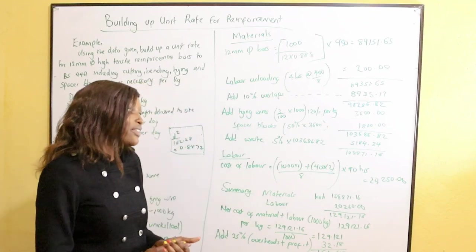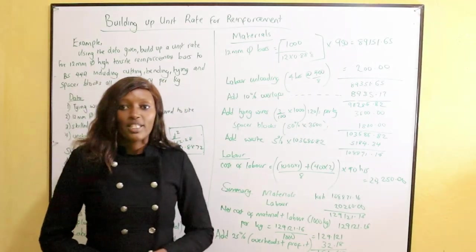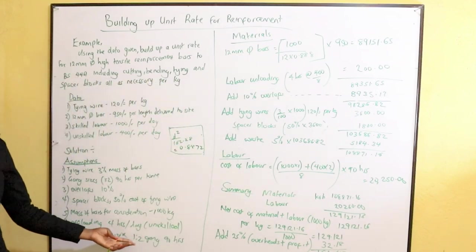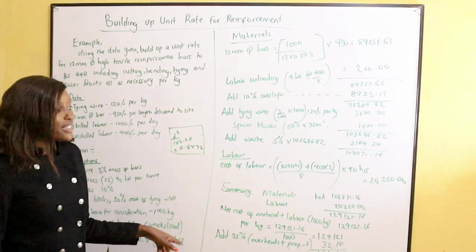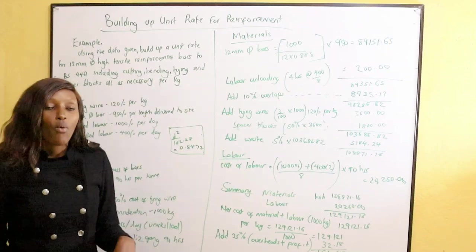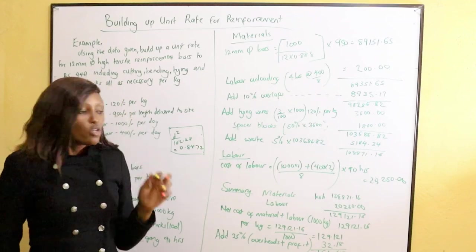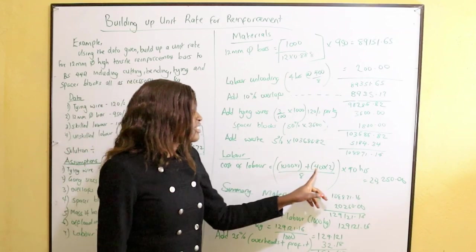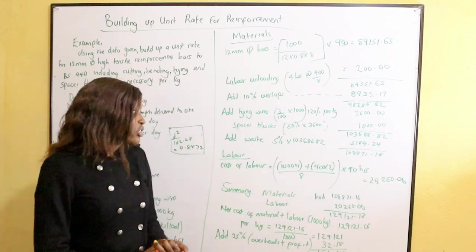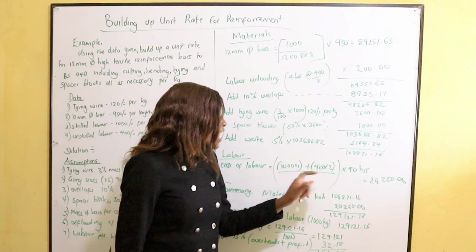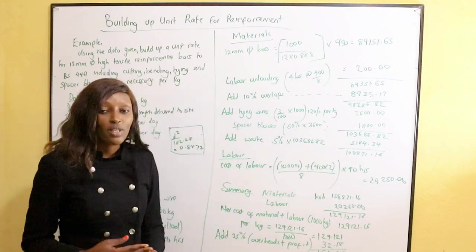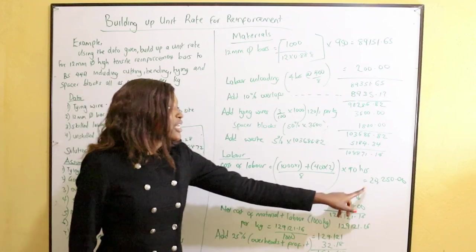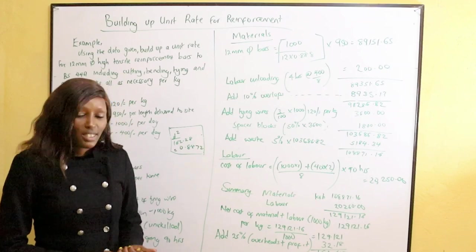The total material cost comes to 108,871.16 shillings. For labor: 1 skilled laborer at 1,000 shillings/day and 2 unskilled at 400 shillings each per day. The total daily cost is 1,000 + 800 = 1,800 shillings. Dividing by 8 hours gives the hourly rate, then multiplying by 90 hours gives the labor cost of 20,250.06 shillings.